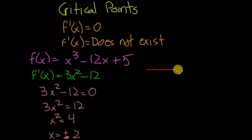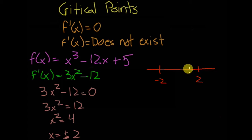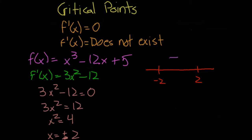I like to make a sign chart. You have negative two and positive two as the critical points. If you plug a number between negative two and two back into f'(x), let's take x = 1: 3(1)² minus 12 equals negative 9, so that interval is negative.